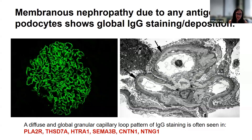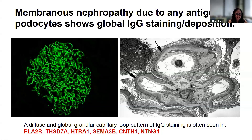Membranous nephropathy with any podocyte antigen will show a diffuse and global granular capillary loop pattern for IgG. Ultrastructurally, we can see global subepithelial deposits — this particular example shows stage one immune deposits. This pattern is relatively nonspecific and is seen with multiple podocyte antigens, so from immunofluorescent findings alone you may not necessarily be able to identify which antigen type it is without further immunostaining.